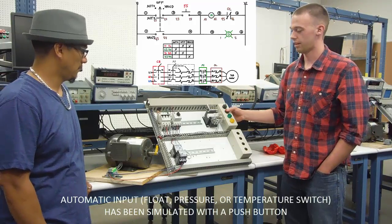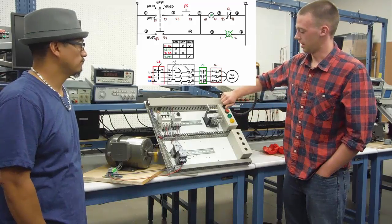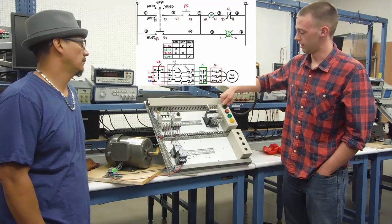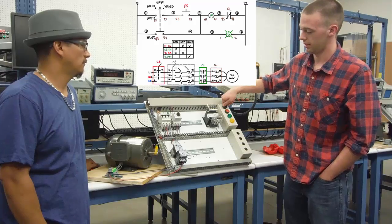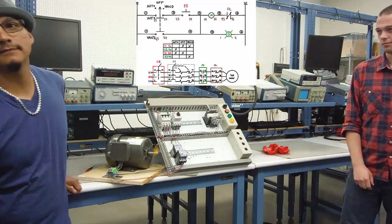In the auto position, when you hit the red button, the motor's going to turn on. And then in the hand position, it overrides the red button, so the motor will automatically turn on. Winner!